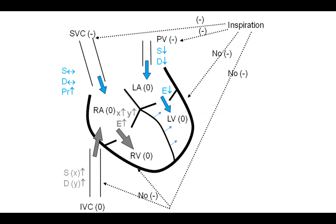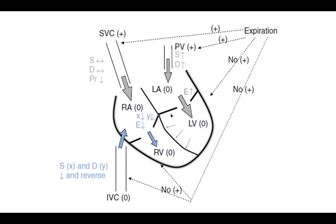It's a little complicated, but hopefully you understand it. The opposite happens in expiration, where pressures are positive and the reverse occurs: the left side expands, pulmonary vein-to-LA flow increases, LV increases and pushes the RV, which shrinks flow from the IVC. And the SVC pressure rises, so you do get some increased flow between the SVC and RA.